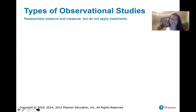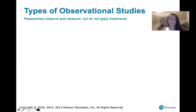In those cases, it wouldn't be ethical or it wouldn't make sense to apply treatments, but we might be interested in the differences between those two groups and how those two variables are related to some other variable. So in observational studies there's no treatment being applied — researchers are not giving subjects anything, but they are still observing and measuring different qualities related to the experiment.